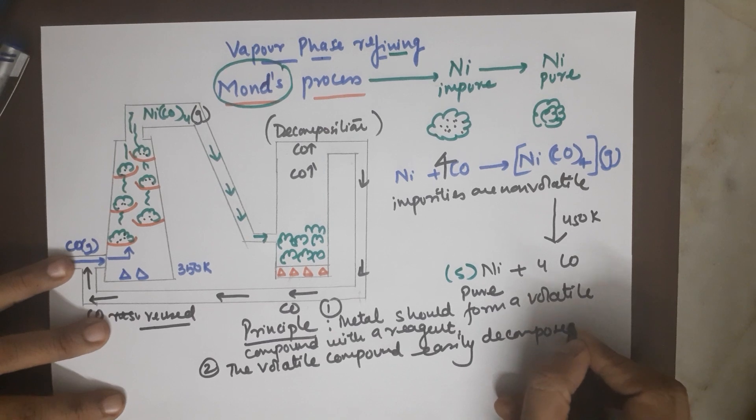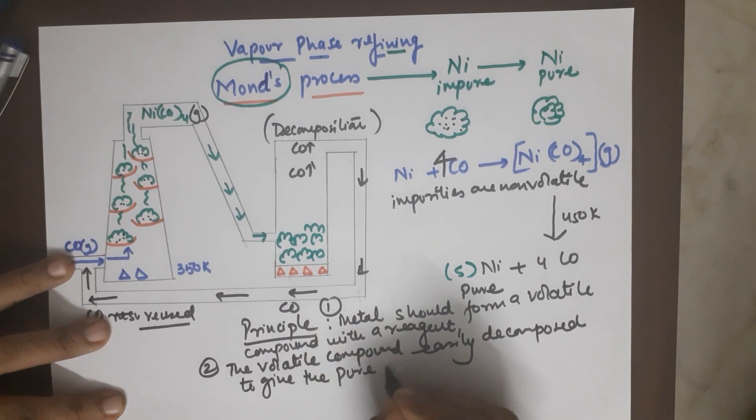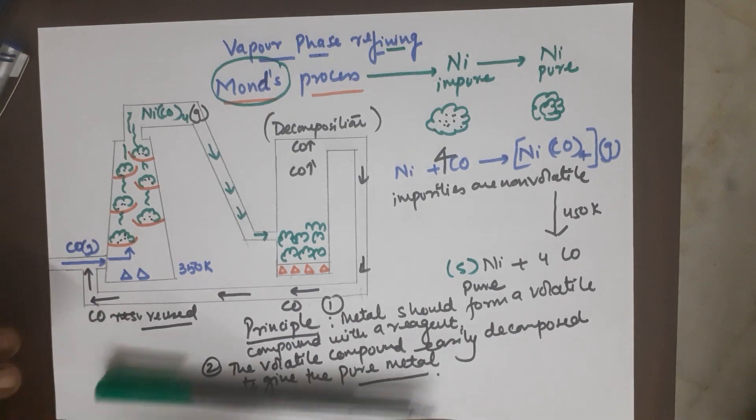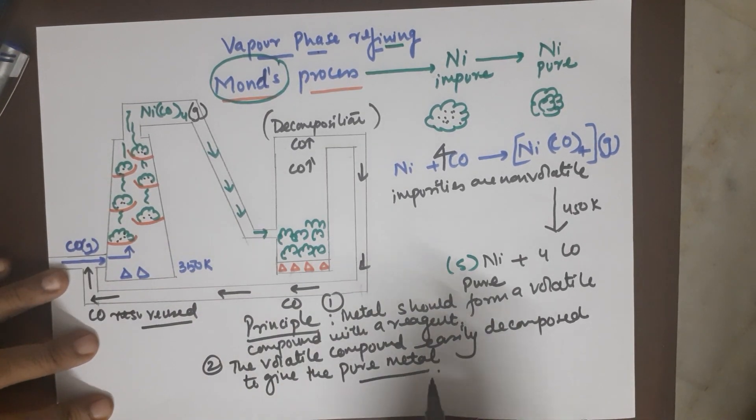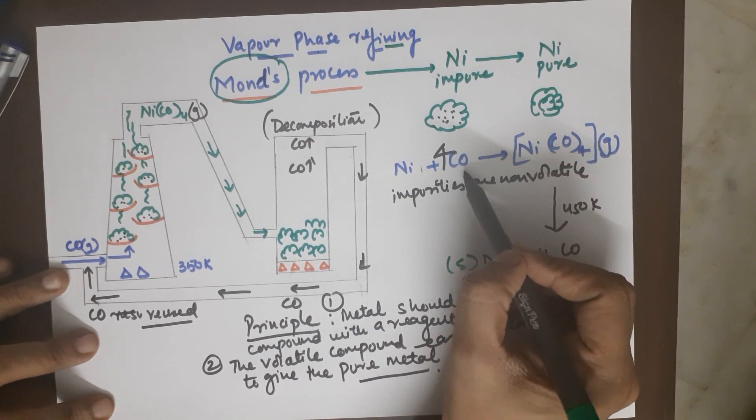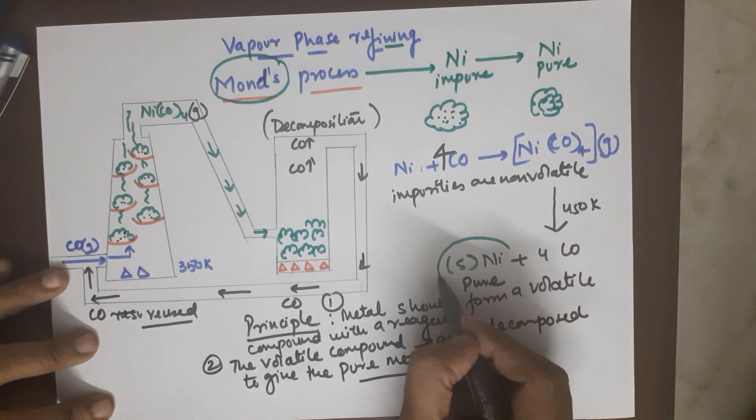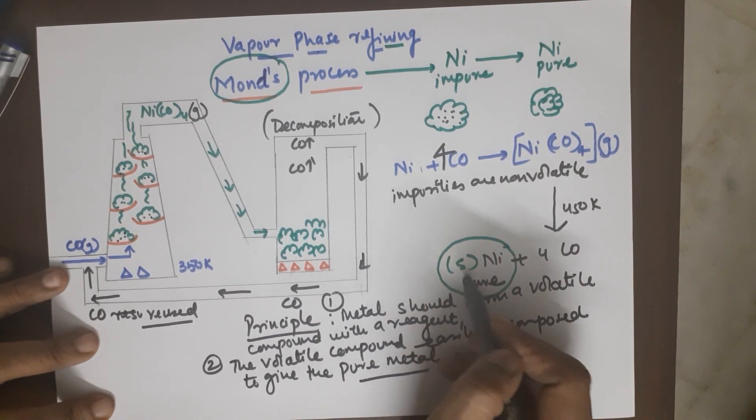And the second step in this case is that the compound formed, that is this volatile compound, the nickel tetracarbonyl which you have formed, should be easily decomposed, which means it should decompose to give the pure metal. So these are the two key steps for the principle of Mond process. Your metal should form a volatile compound with a suitable reagent which should not be very expensive, and this compound should further be easy to decompose to get back the pure nickel which is what you obtain in the decomposition chamber.